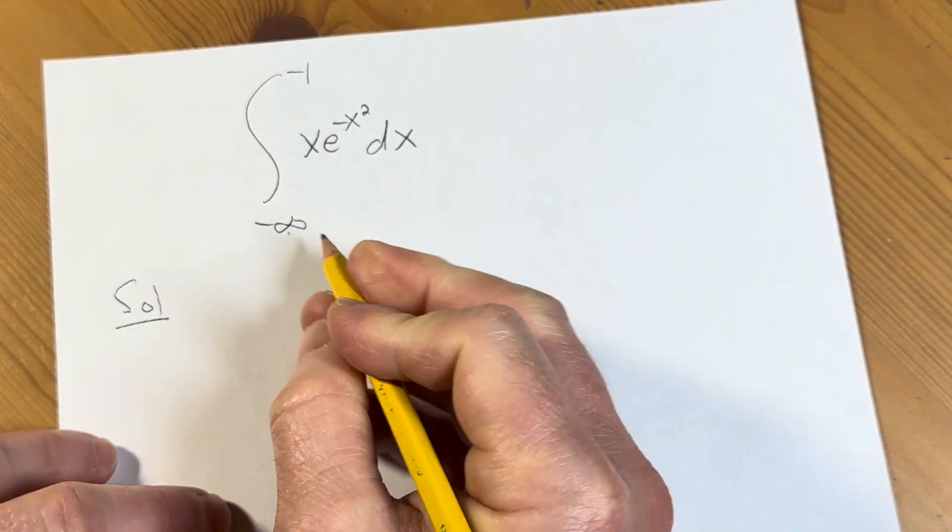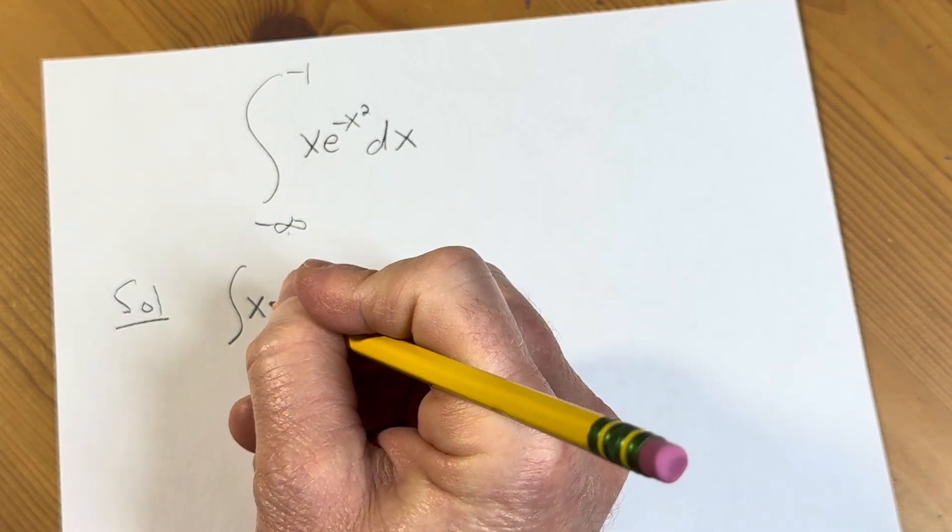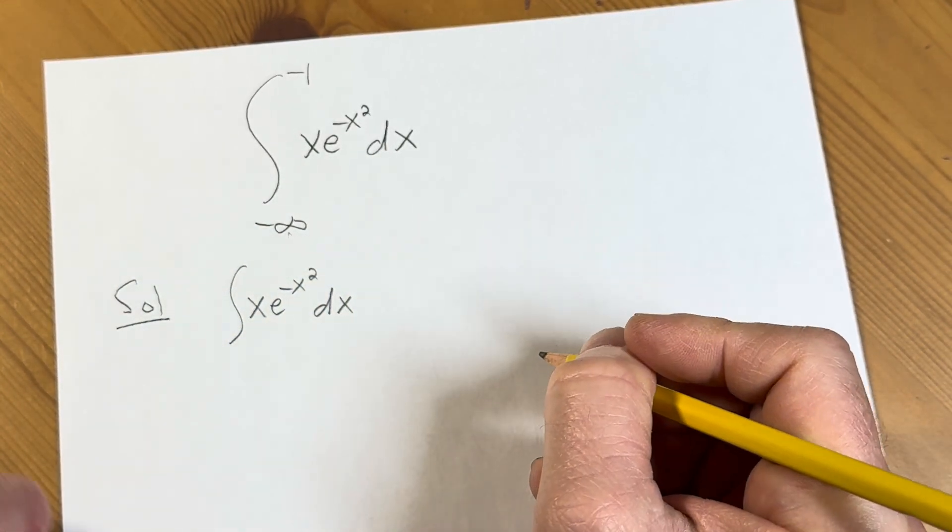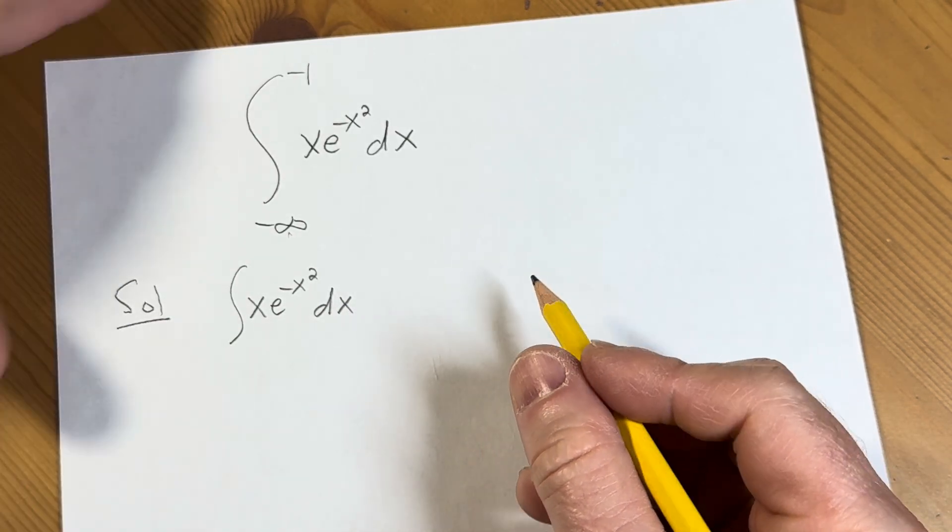So, solution. First we're going to focus on the indefinite integral of x e to the negative x squared dx. To do this we're just going to make a simple substitution. It's pretty easy.